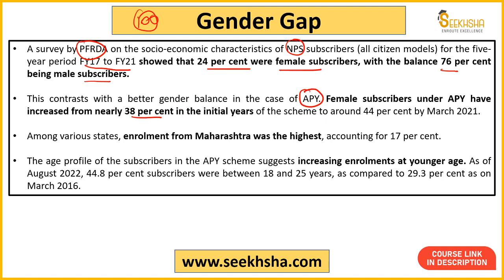In the Atal Pension Yojana, the gender gap is comparatively less. Female subscribers were around 38% in the initial years when the scheme launched, and by 2021 around 44% of subscribers were female, with the remaining 56% being male. In terms of state-wise enrollment in Atal Pension Yojana, Maharashtra had the highest enrollment at around 17%. Regarding enrollment at younger age, 44.8% of APY subscribers in 2022 were between 18–25 years of age, compared to 29.3% in 2016.